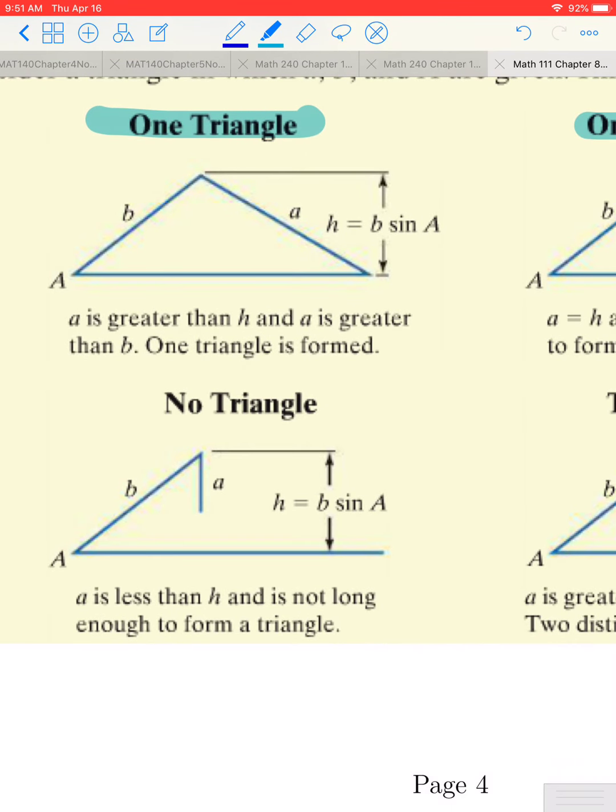If A is less than H and is not enough to form a right triangle, so here we have a situation where if A is ever less than H, then that side won't be long enough to attach or to connect to the other line segment that's coming out of A, to form angle A, and therefore that would create no triangle. So if A is less than H, we get no triangle.